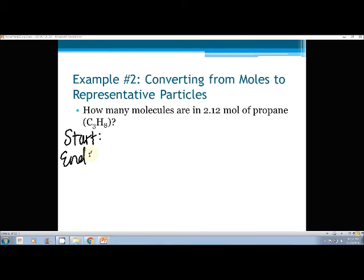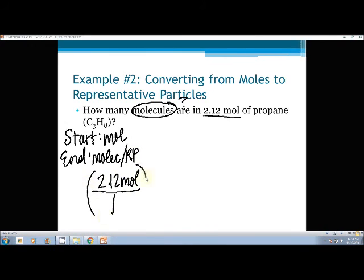Next step is put the number in the problem over 1. So we have 2.12 moles over 1. Then we need to look at our mole map to determine what to do next. This time we're starting in the mole circle and we're going to the RP circle. So we're going to use the top or the bottom arrow? The top arrow. The top arrow says to put Avogadro on top this time. So I have 6.02 times 10 to the 23rd, and I'm not going to put particles. I'm going to put what I'm trying to find, which is molecules, molec for short, over 1 mole.